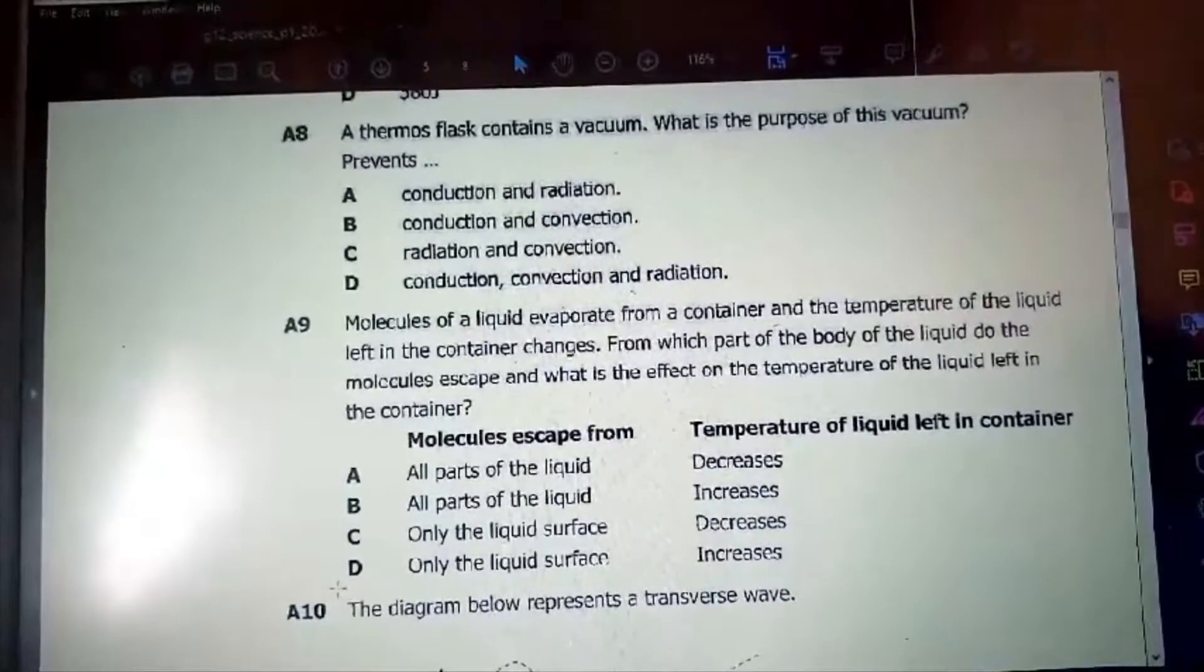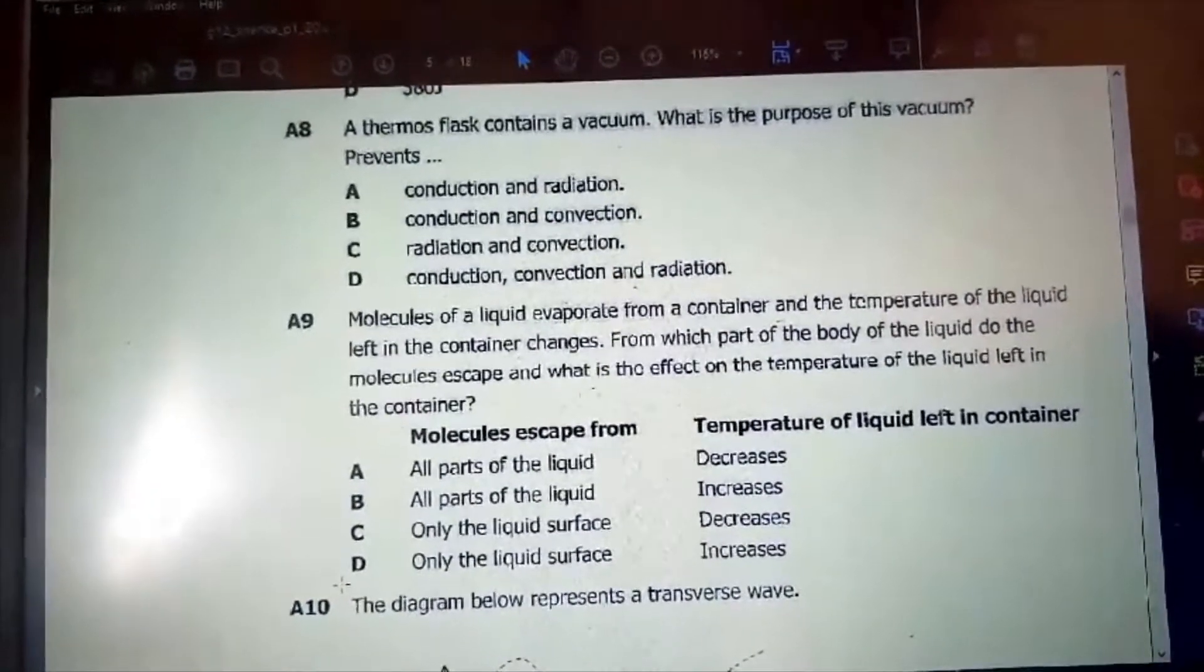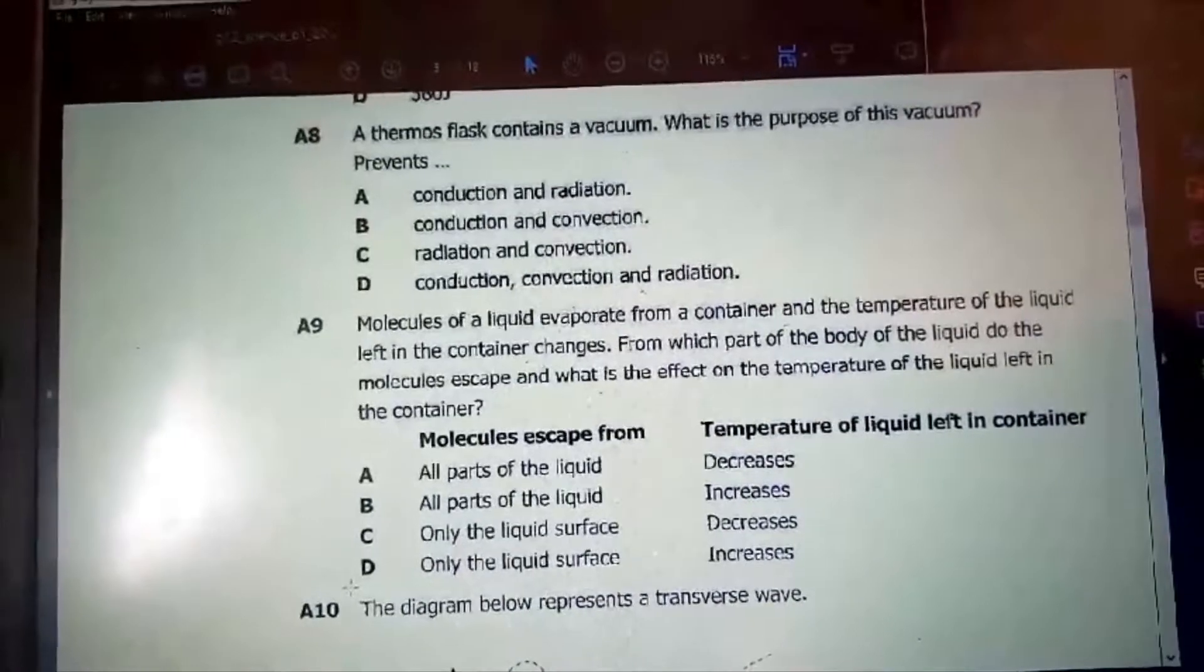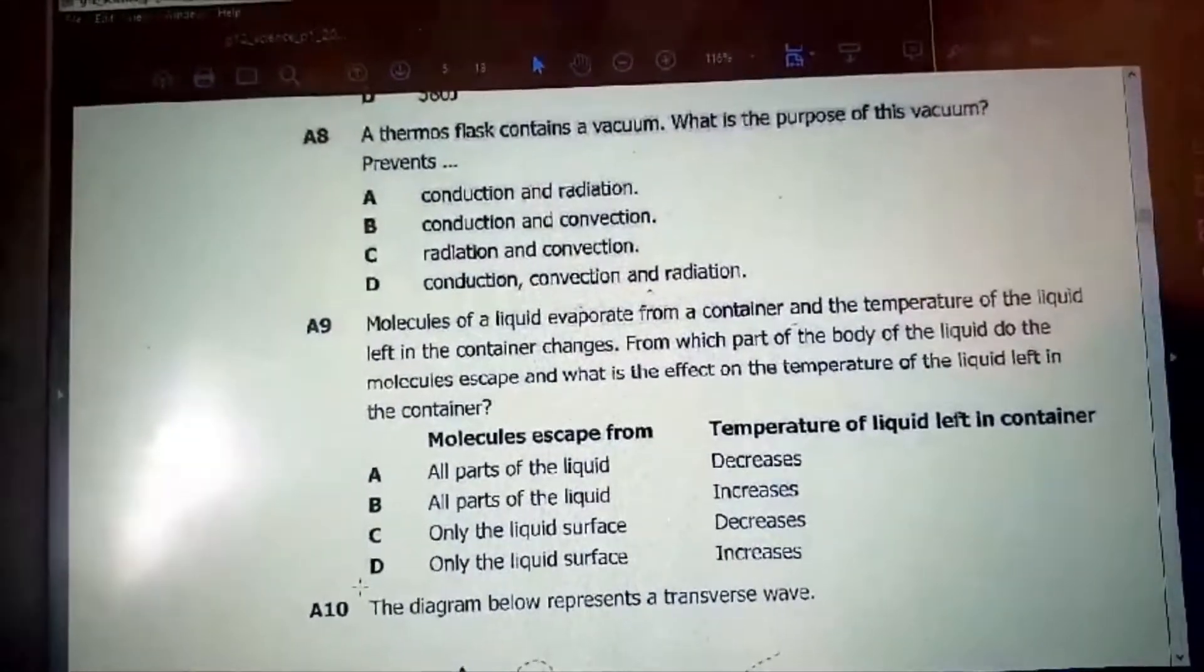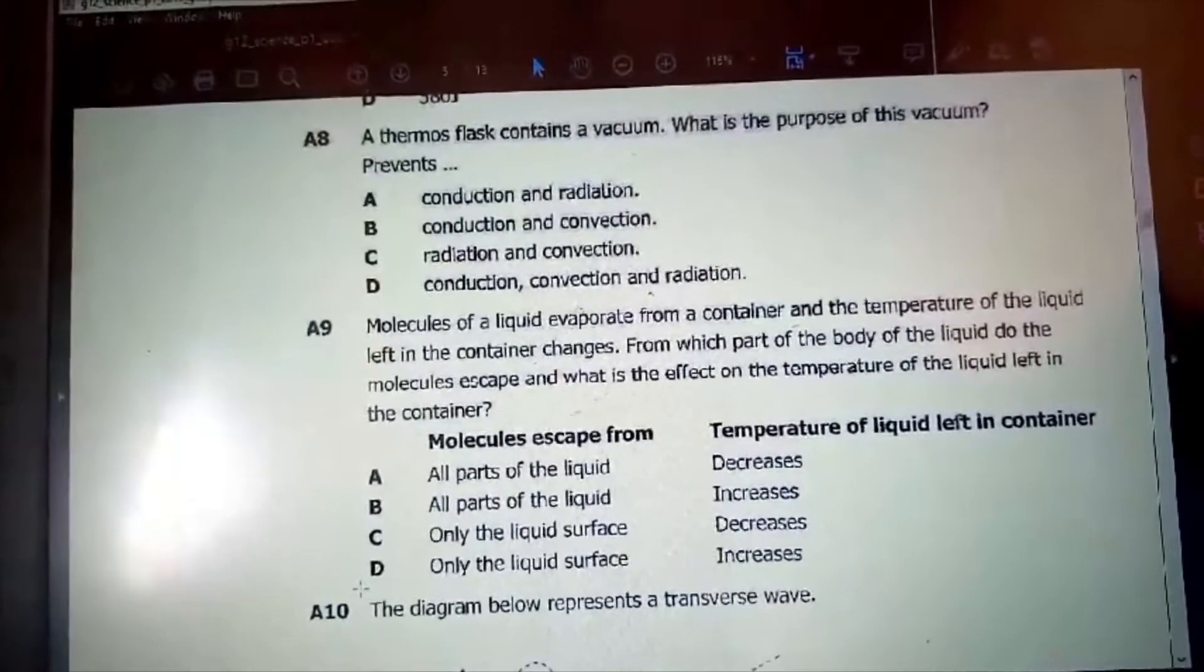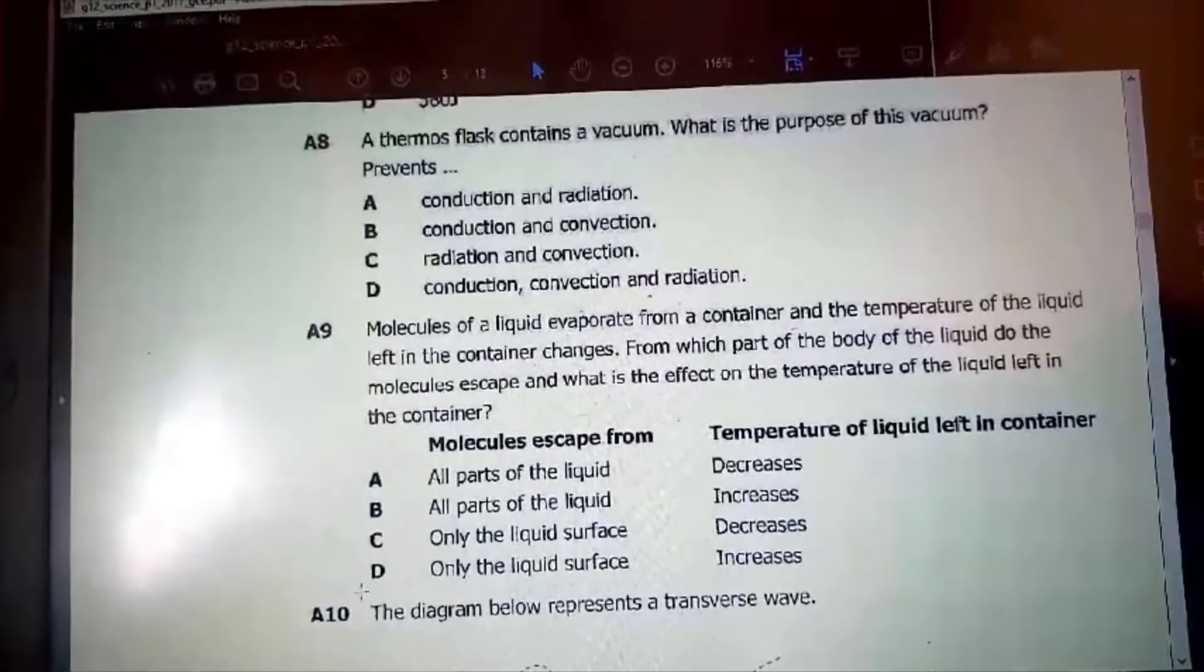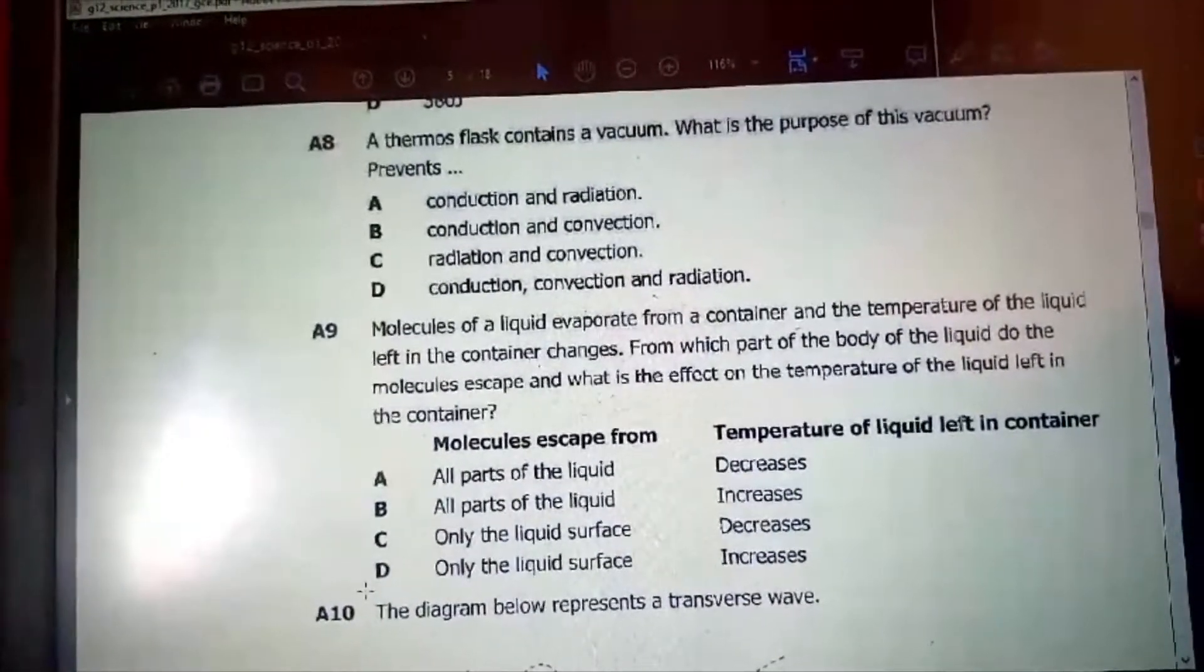Question 8: Because of this vacuum, the purpose of the vacuum mainly is to prevent heat transfer by conduction and convection. Because when heat is being transferred by radiation, it can even pass through a vacuum. So it prevents the heat transfer by conduction and convection. So the answer is B.